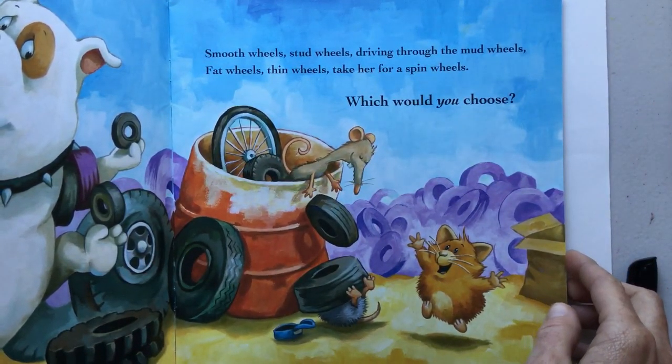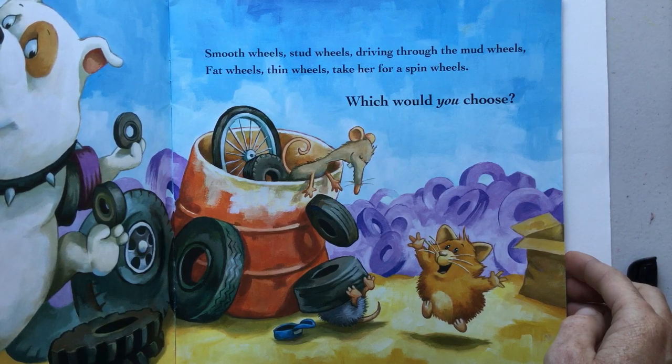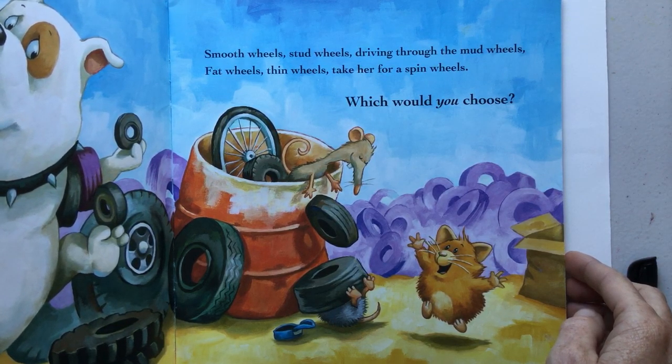I'll take the green car. It's just my size. It'll need new tires and wheels. Yes, I want to burn rubber. There's the car Hot Rod chose. Let's look at these different wheels that the dog is holding. Smooth wheels, stud wheels, driving through the mud wheels, fat wheels, thin wheels, taker for a spin wheels. Which would you choose?